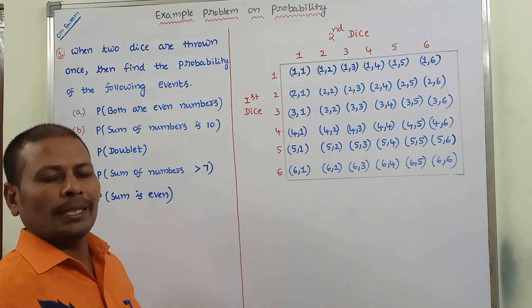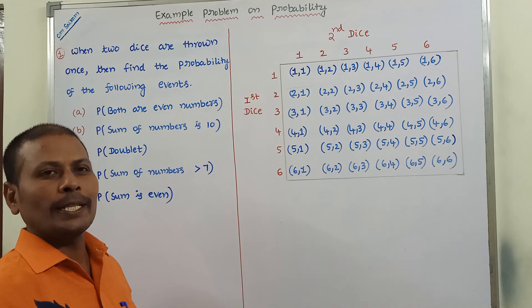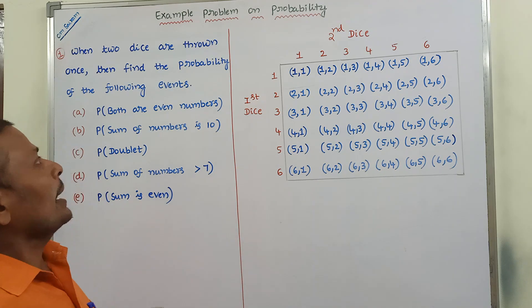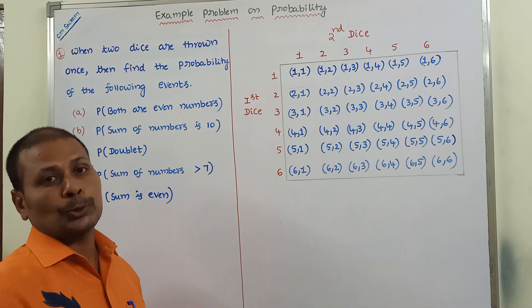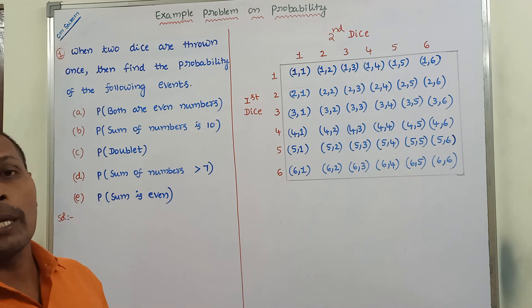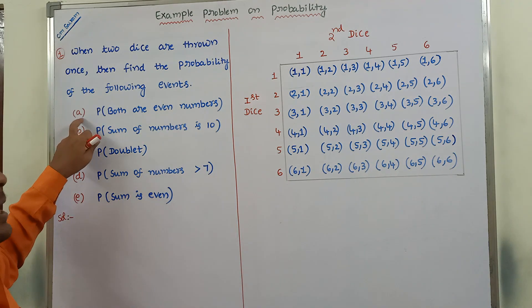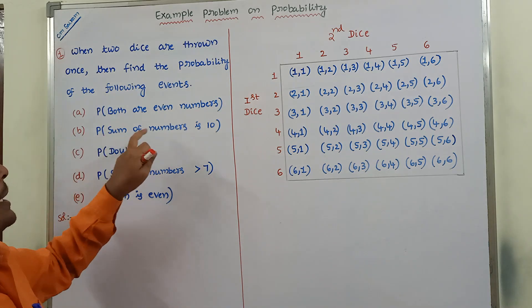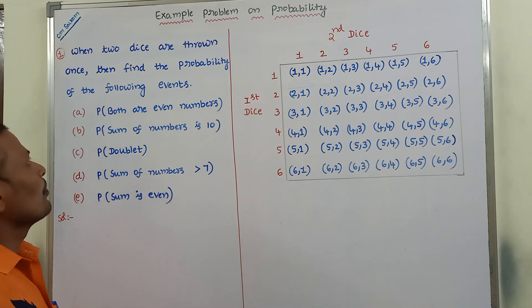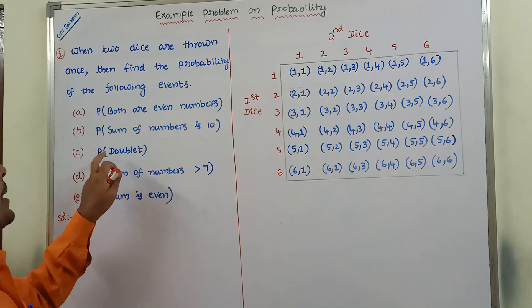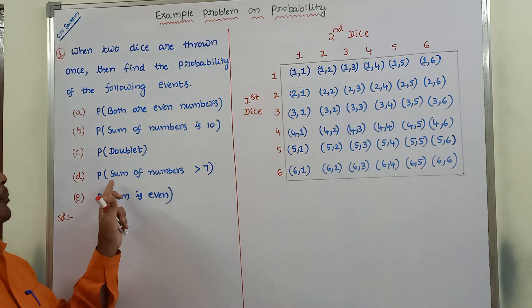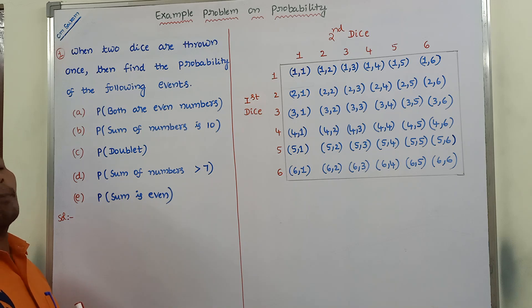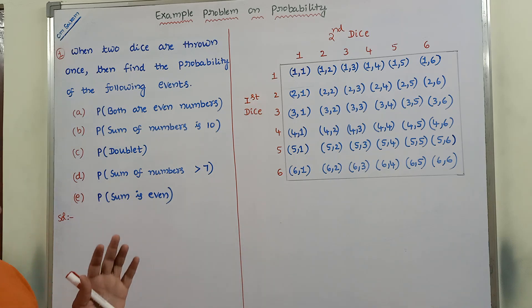Hi friends, welcome back to our YouTube channel. Today we have to discuss an example problem on probability in statistics. The given problem is: when two dice are thrown at the same time, find out the probability of the following events. Bit A: probability of getting both even numbers. Bit B: probability of getting sum of numbers is 10. Bit C: probability of getting a doublet. Bit D: probability of getting sum of numbers greater than 7. Bit E: probability of getting sum of numbers is an even number.